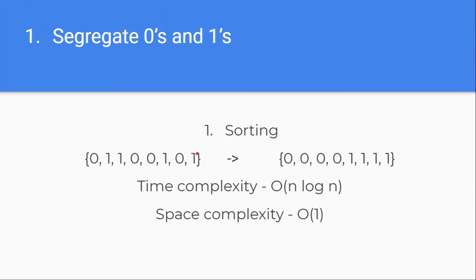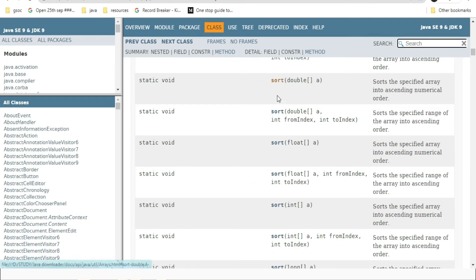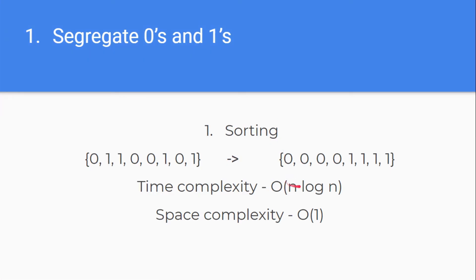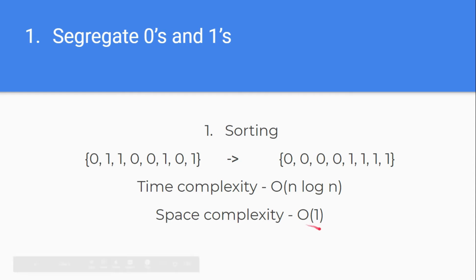The first thought that comes to mind is sorting the array. There are built-in methods for sorting in almost every programming language, at least in Python and Java. If we use that, it will be done in a single line, but the worst-case time complexity of sorting an array is O(n log n). Space complexity will be O(1). Let's try to achieve O(n) time.